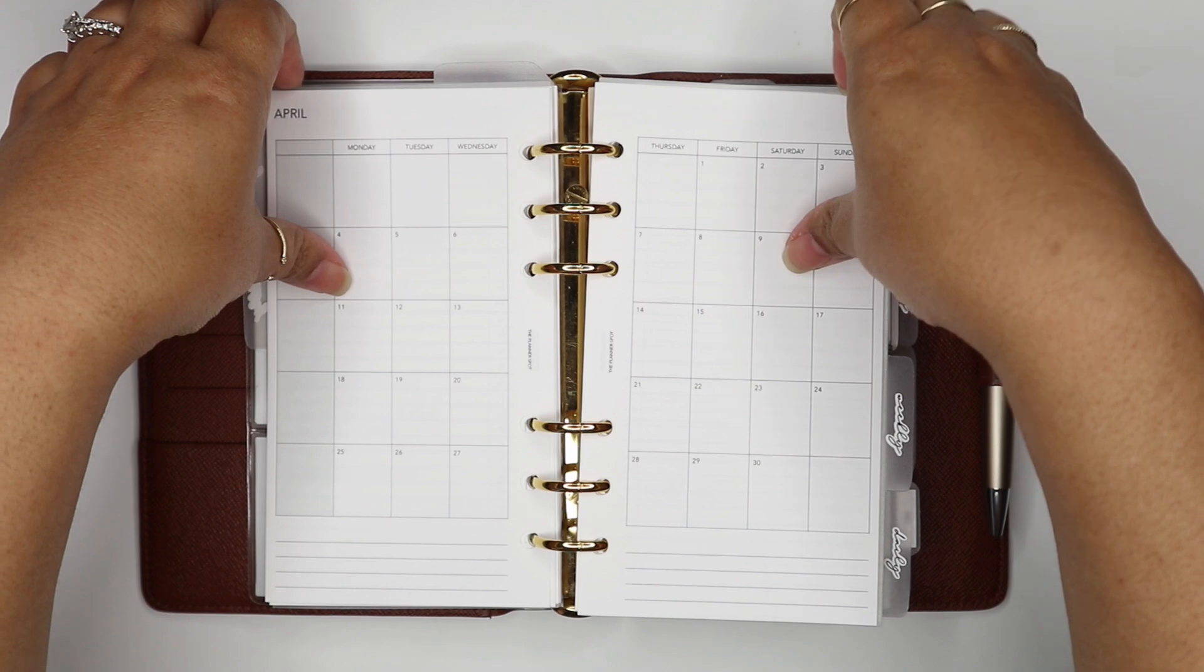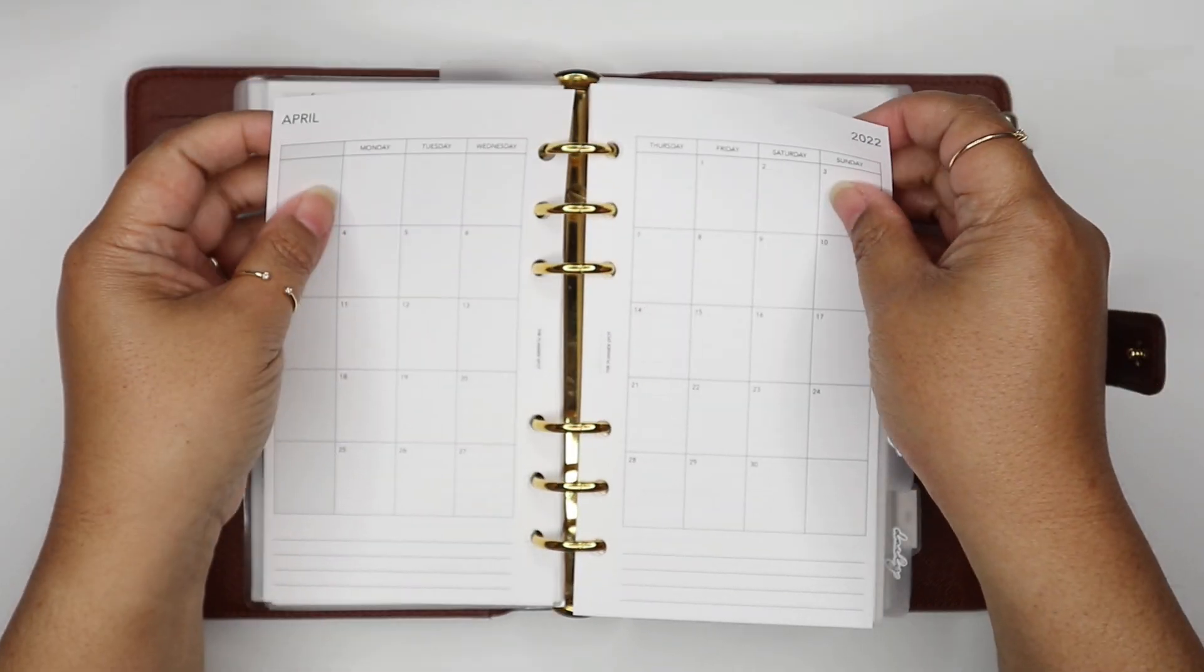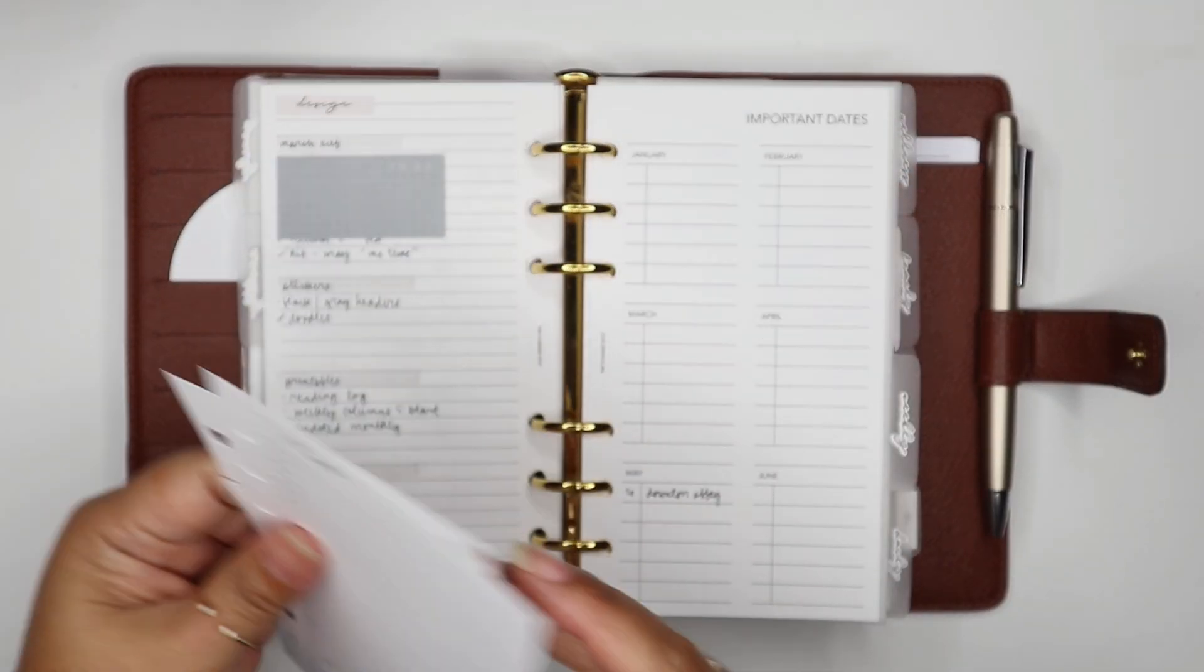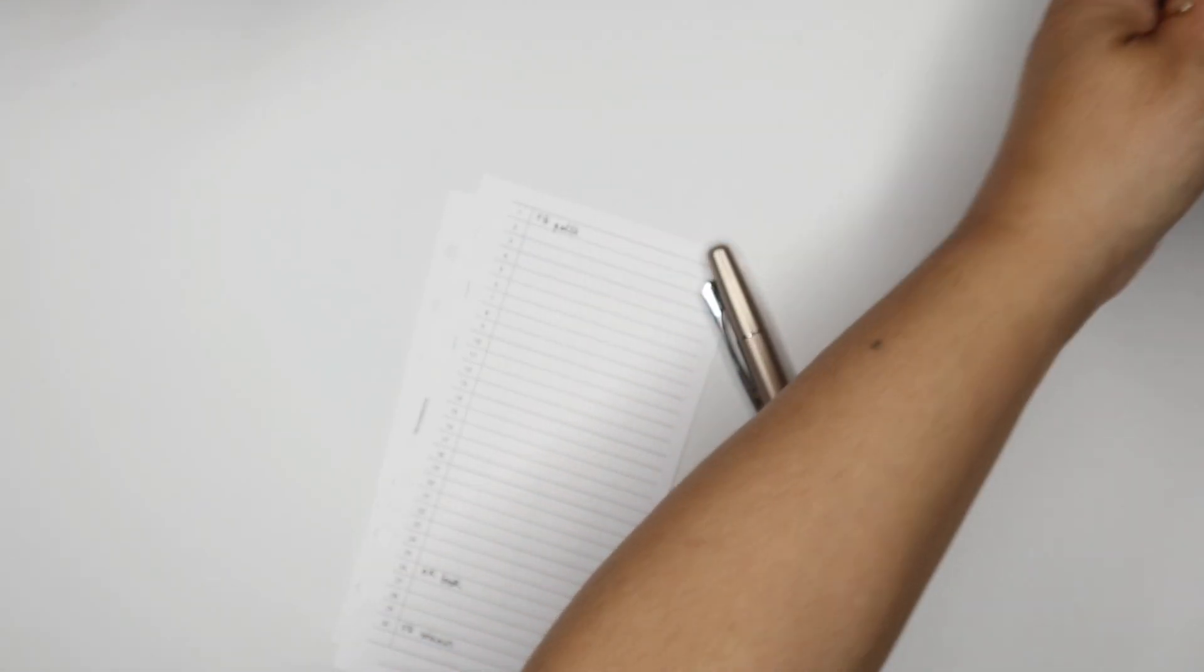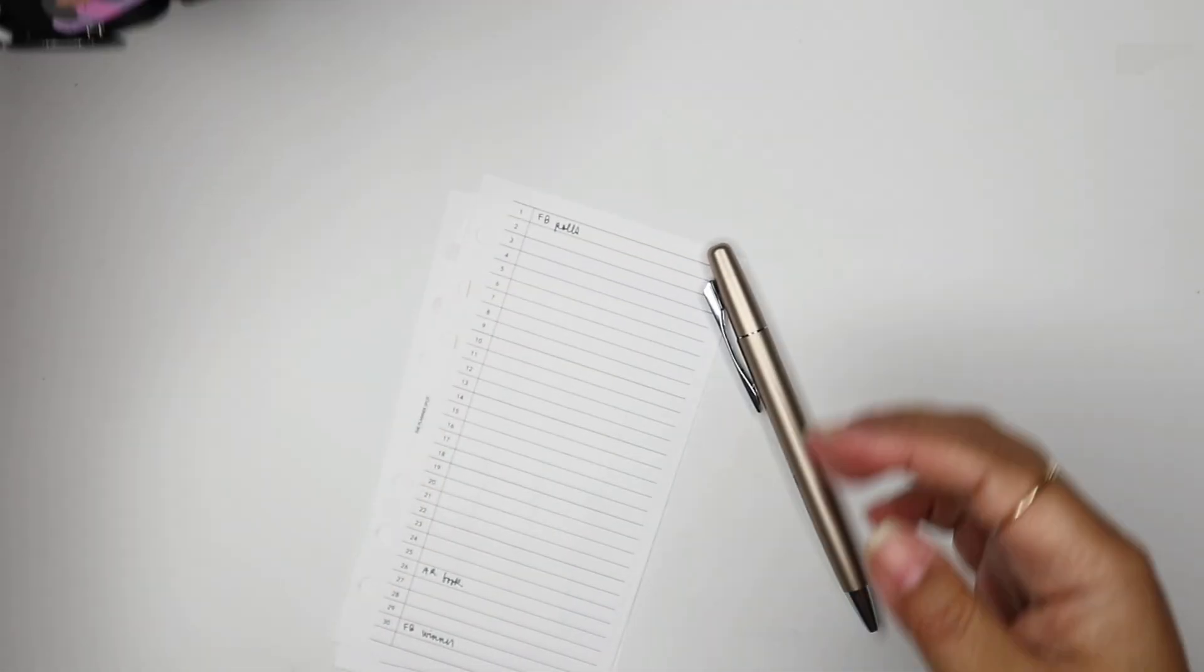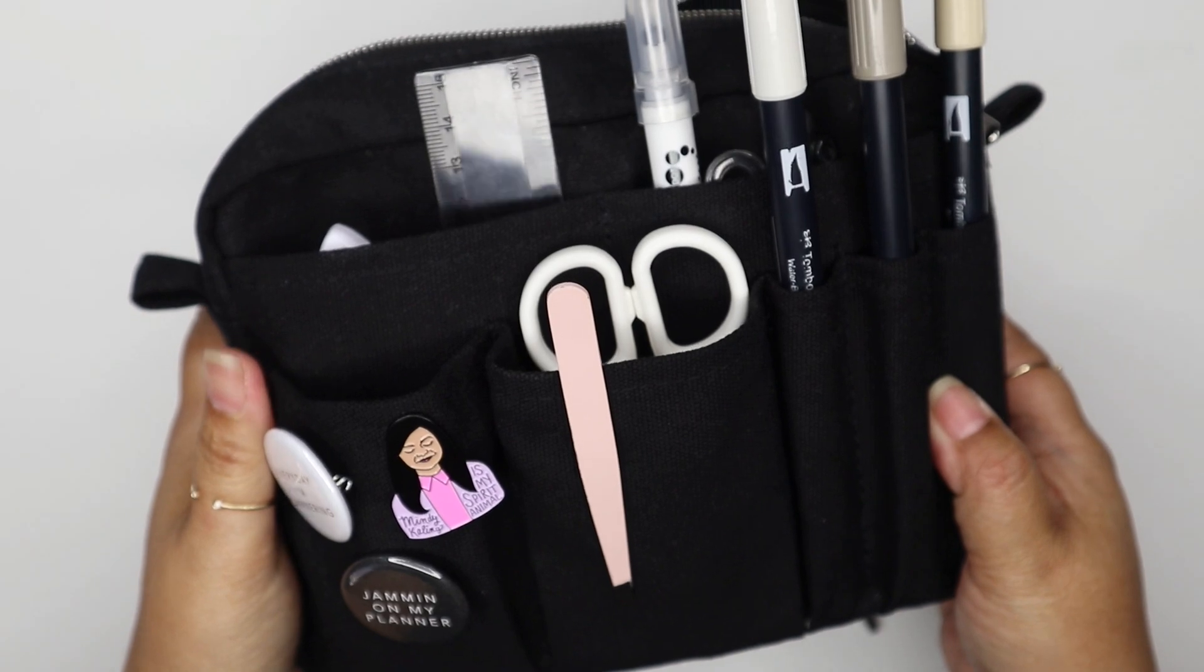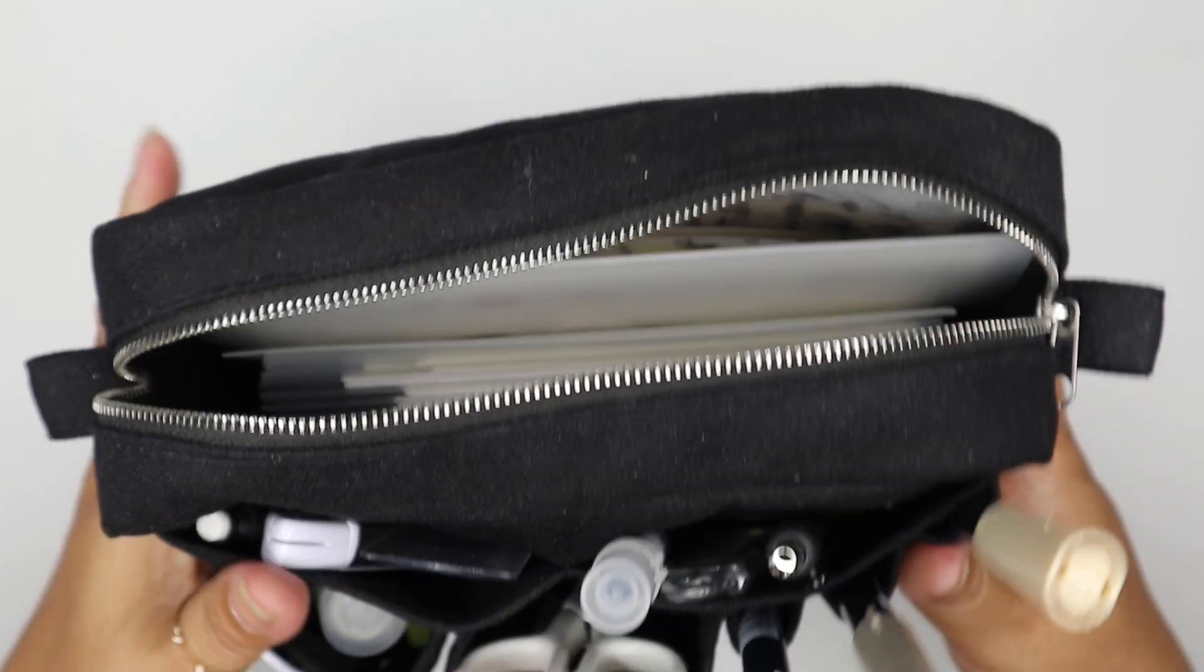First I take my inserts out of my planner so it's easier to plan. I have my iPad here because that's where my Google calendar is, and my planner pouch with all my stickers and supplies around my table.